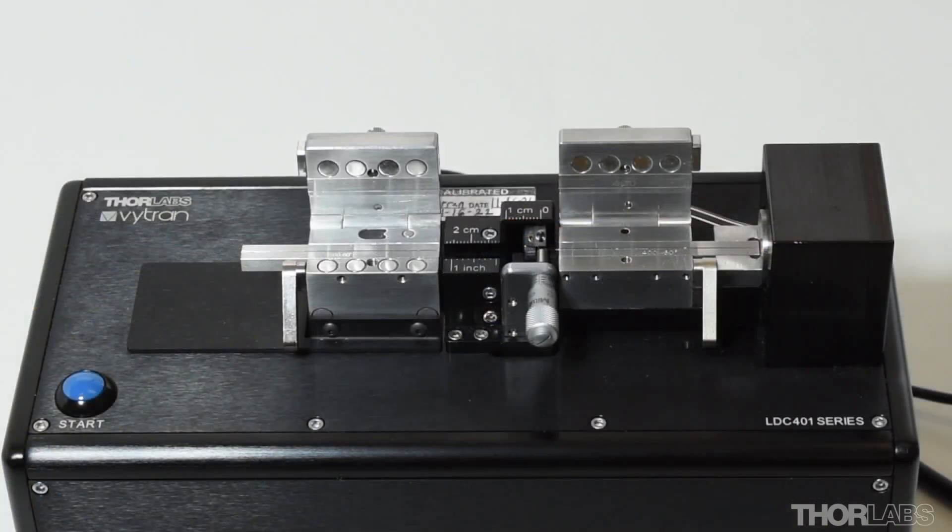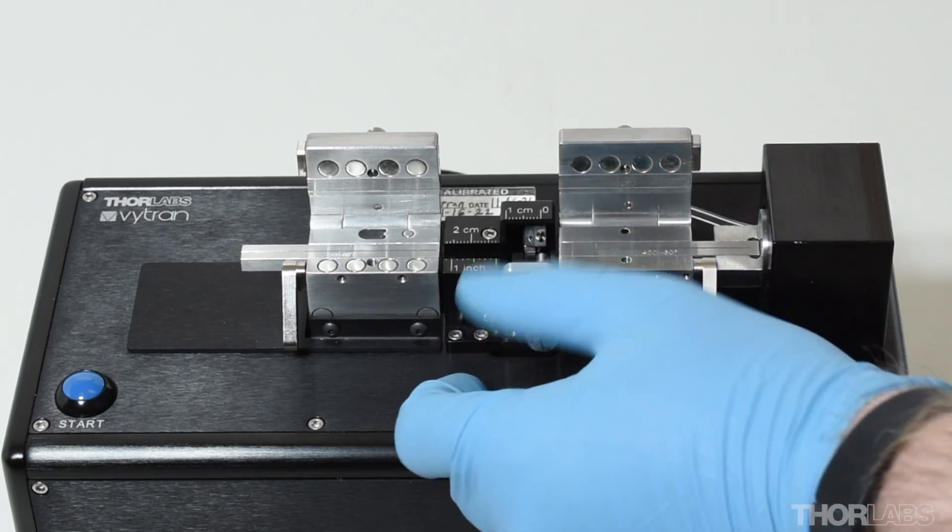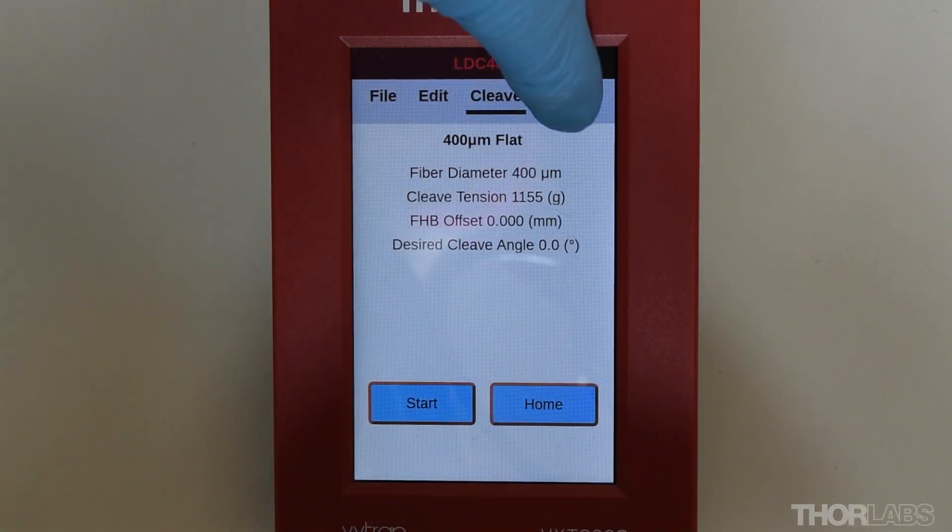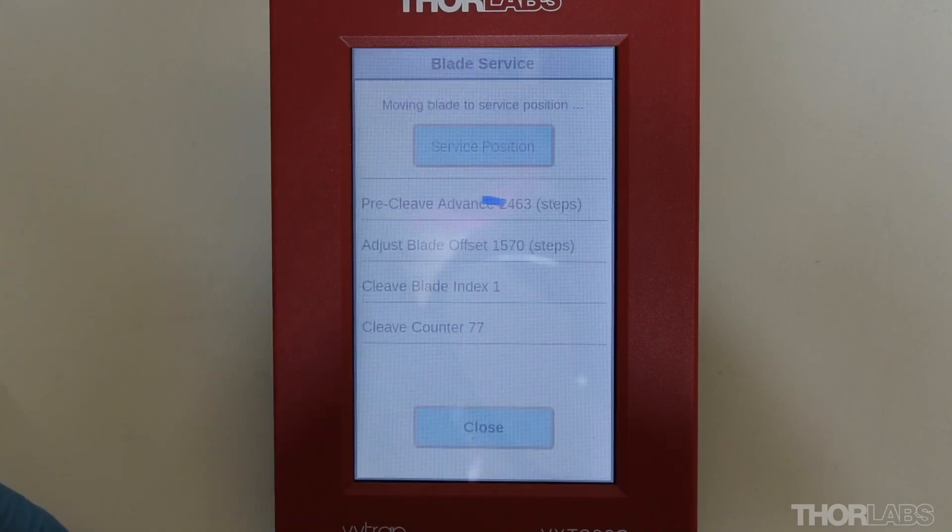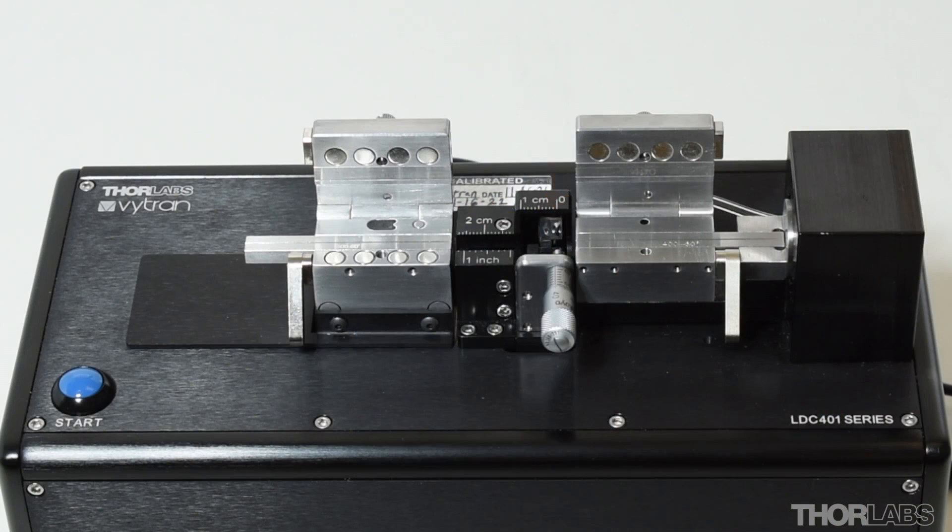Before moving the cleave blade to the service position, ensure there is no fiber debris in the fiber holding block and that the micrometer backstop is fully retracted. Then, use the handset controller to select Tools, Blade Service. This will cause the blade to move forward from its home position to the service position.